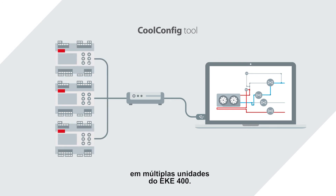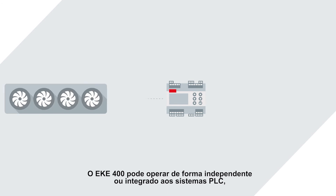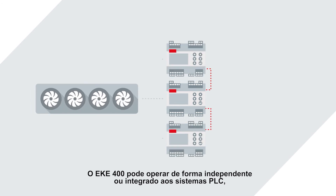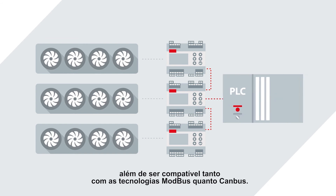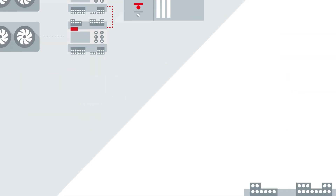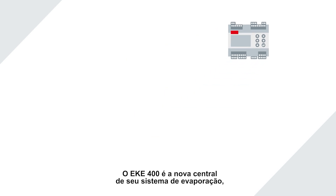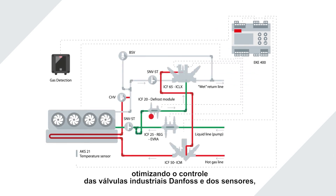The EKE 400 can operate independently or integrate with PLC systems, and is compatible with both Modbus and CANbus technologies. The EKE 400 is the new center of your evaporator system, optimizing control of Danfoss industrial valves and sensors for top-of-the-line performance.